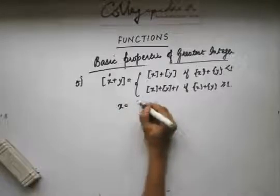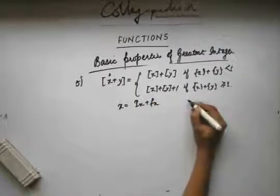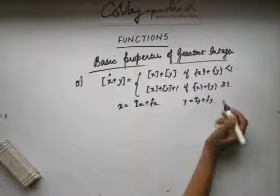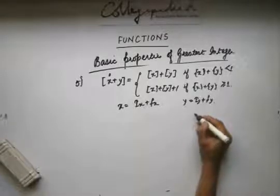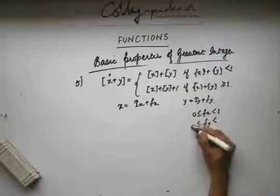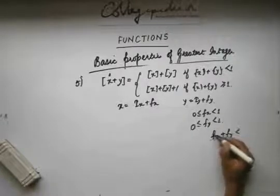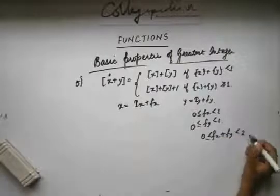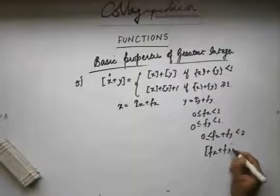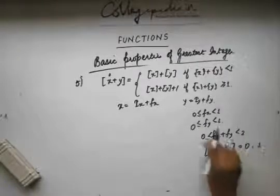To prove this, let's say x equals ix plus fx, where ix is the floor function part and fx is the fractional part, and y equals iy plus fy. The fractional part of x lies between 0 and 1, and similarly the fractional part of y lies between 0 and 1. So the sum of the fractional parts fx plus fy lies between 0 and 2. Therefore, ⌊fx+fy⌋ can be either 0 or 1 depending on which interval it falls in.